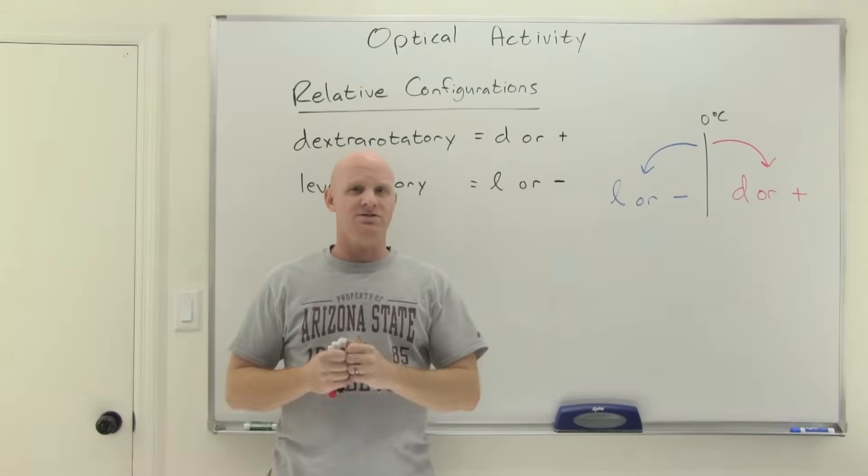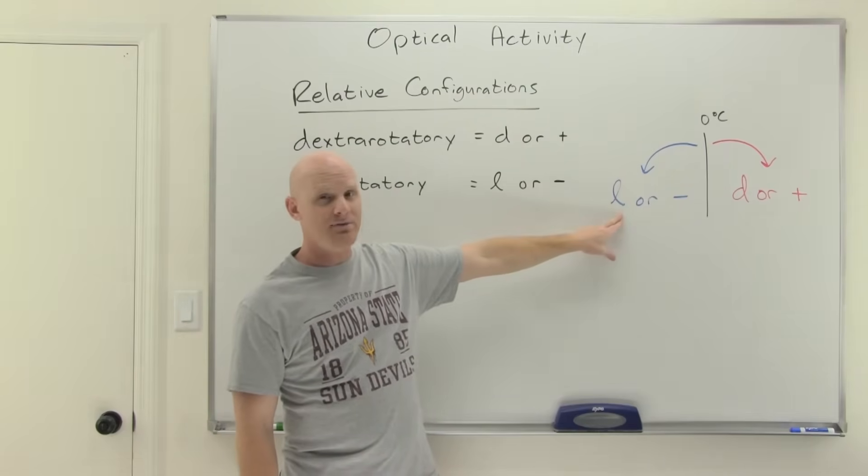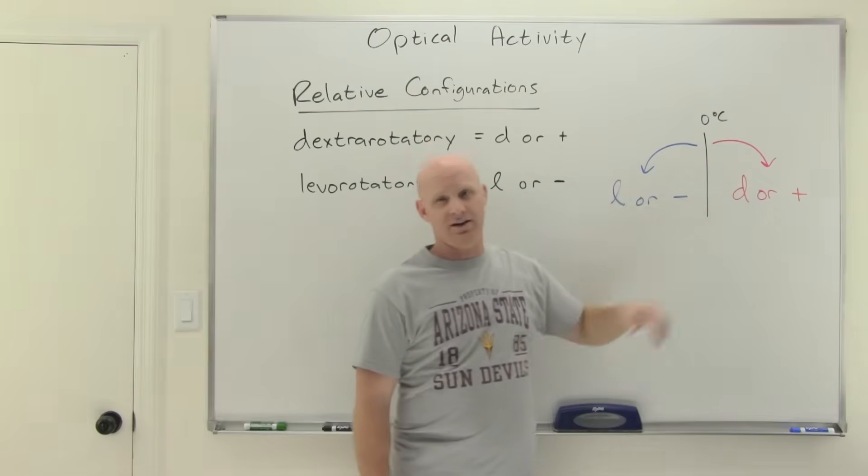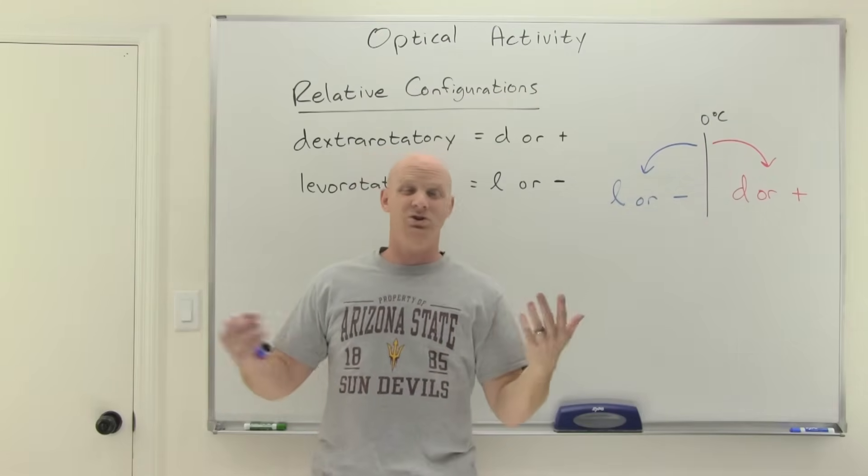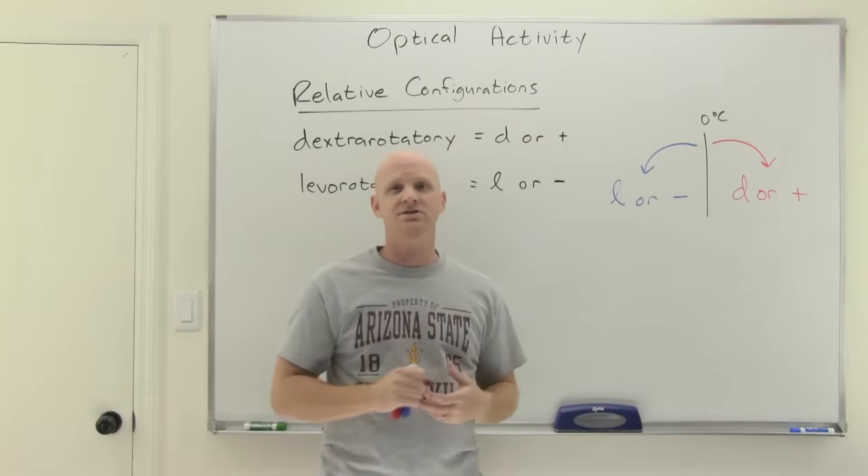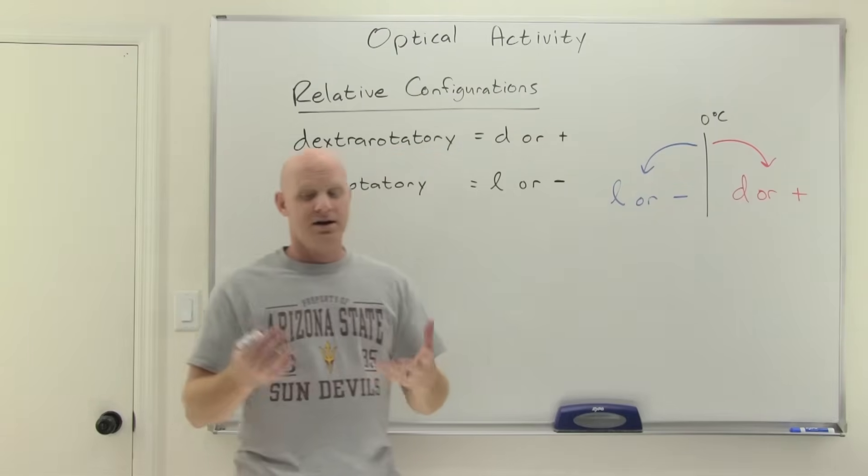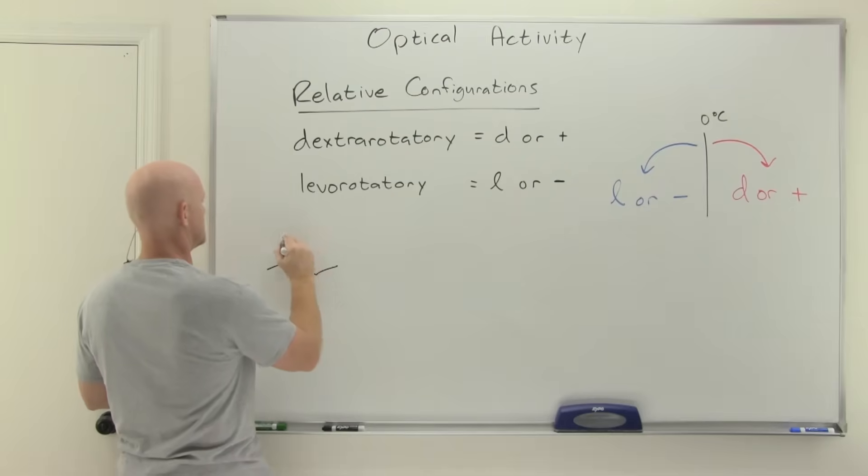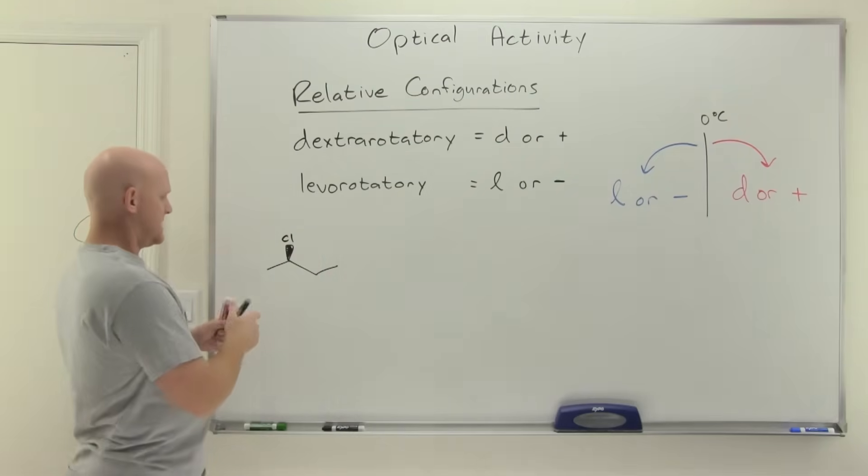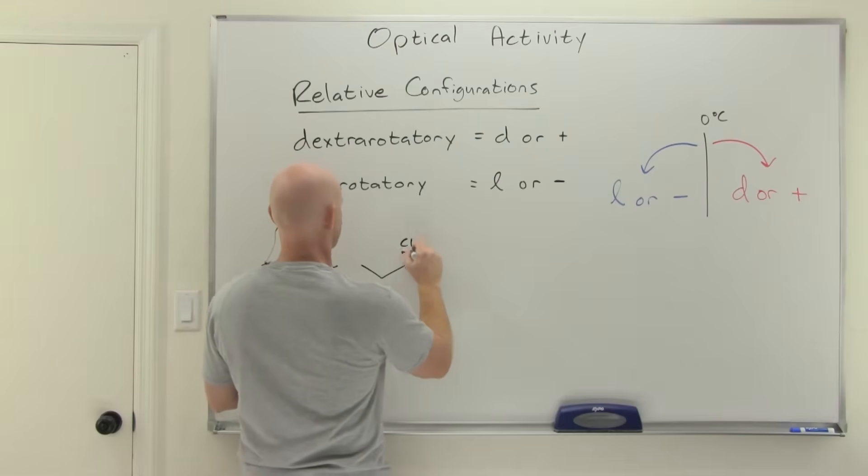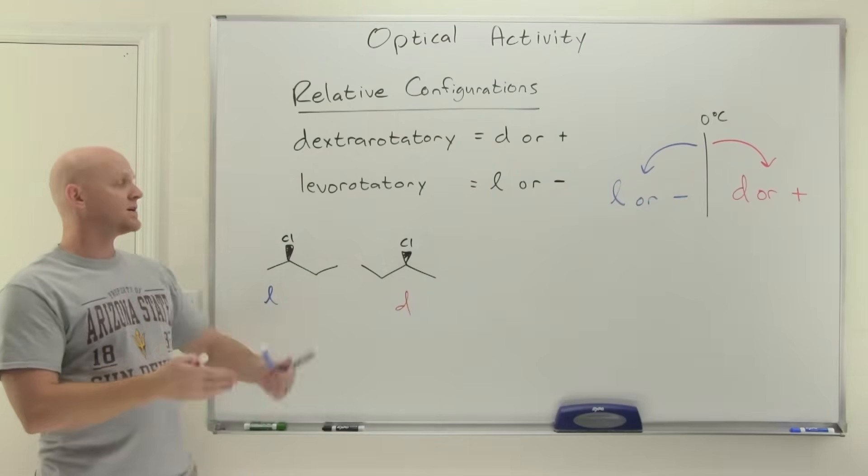So one thing to note then, because you can look at a structure and assign R and S, but you can't look at a structure and assign D or L, there's no connection between the two. So for some enantiomers, the R isomer ends up being the L or minus isomer. For other compounds, the R isomer ends up being the D or plus isomer. There's no connection there. What you do know though, is that you're always going to have two enantiomers. And so if I told you that R happened to be the L, the levorotatory isomer, you'd know for that specific compound, then the S would correspond to the D or plus isomer. So you always know they're opposites. But until I tell you one, you don't have a clue.